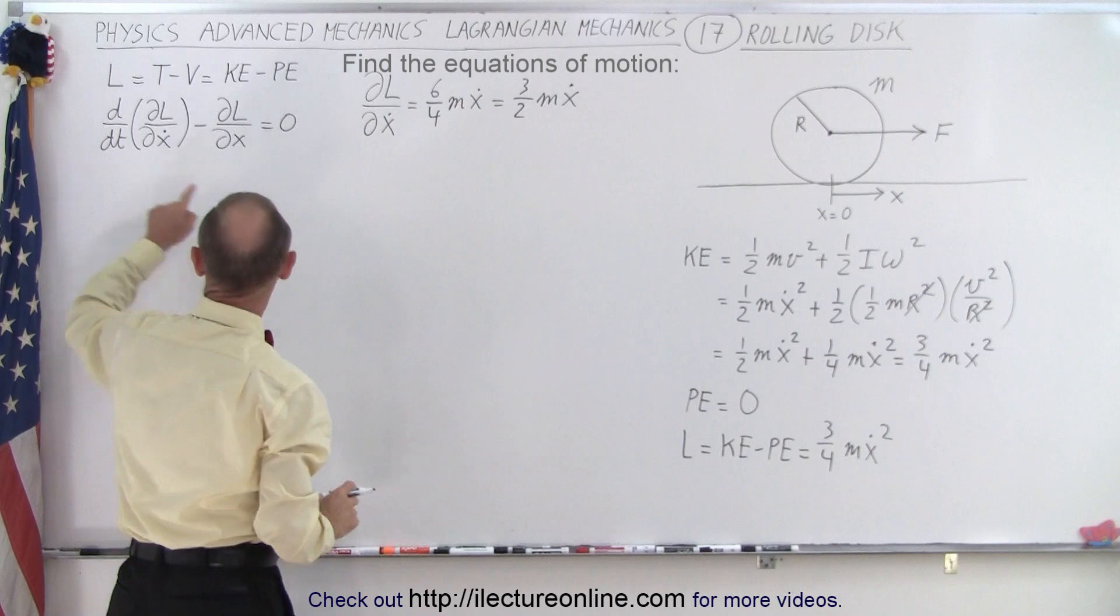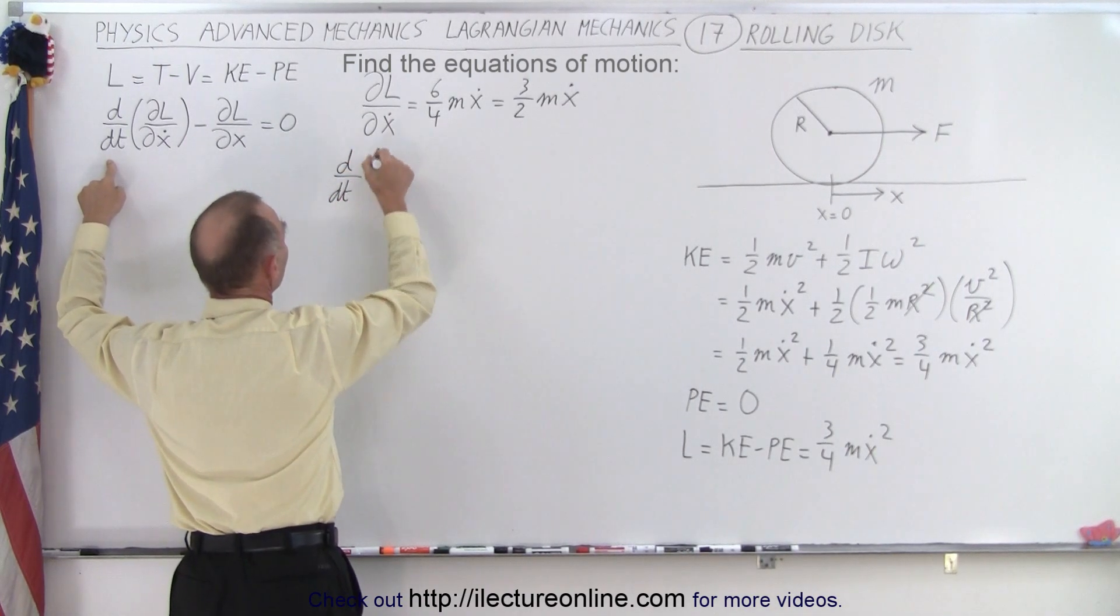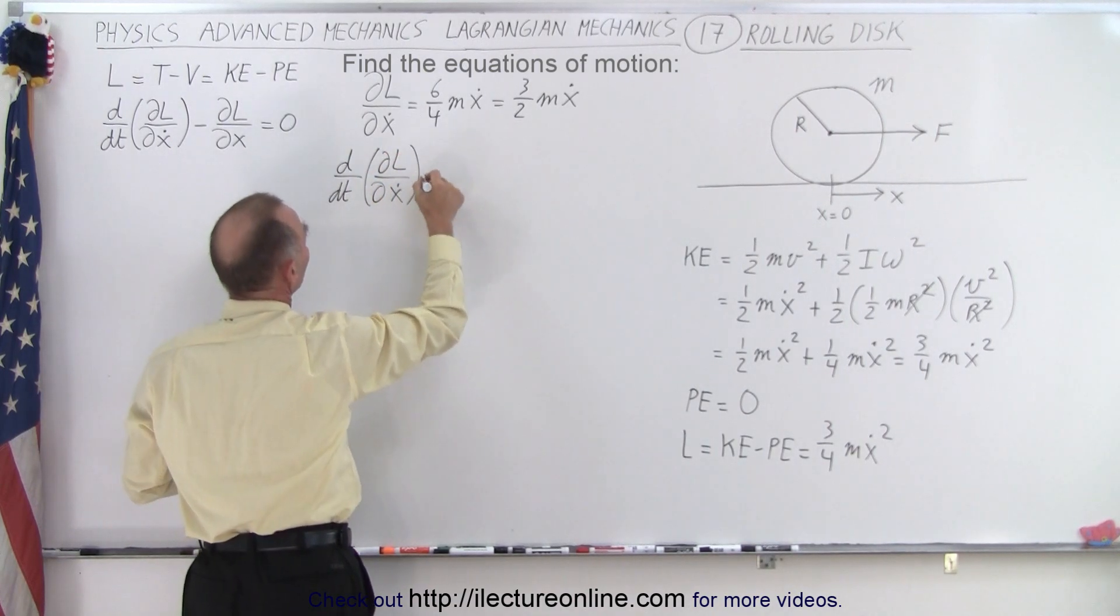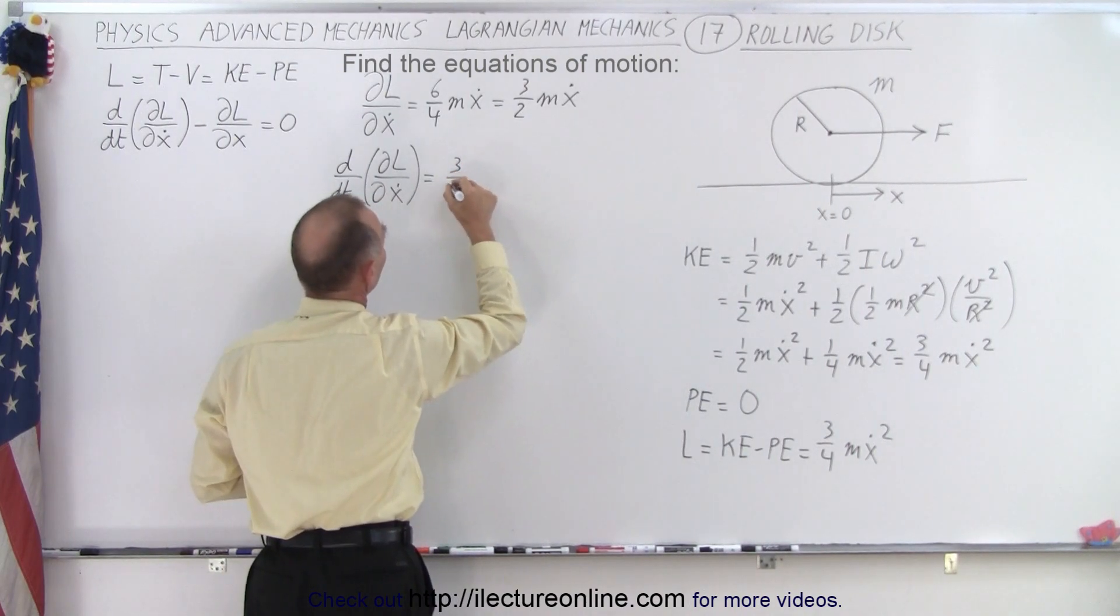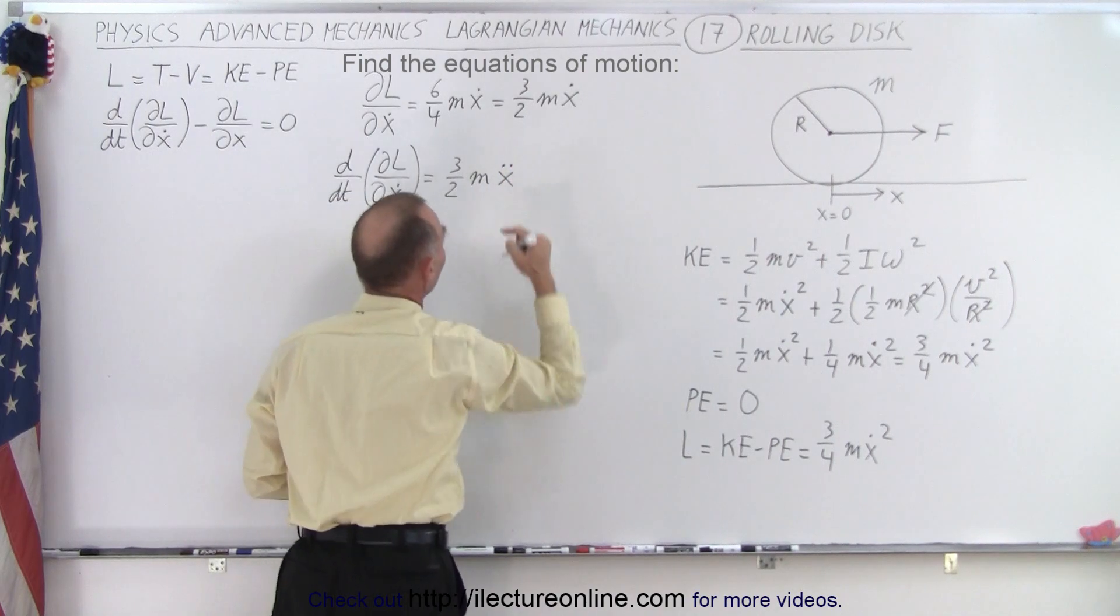And then we're going to take the time derivative with respect to time, so the d/dt of the partial of the Lagrangian with respect to x dot, which is essentially the d/dt of this quantity right here, this gives us three-halves M x double dot. So instead of velocity, we now have acceleration.